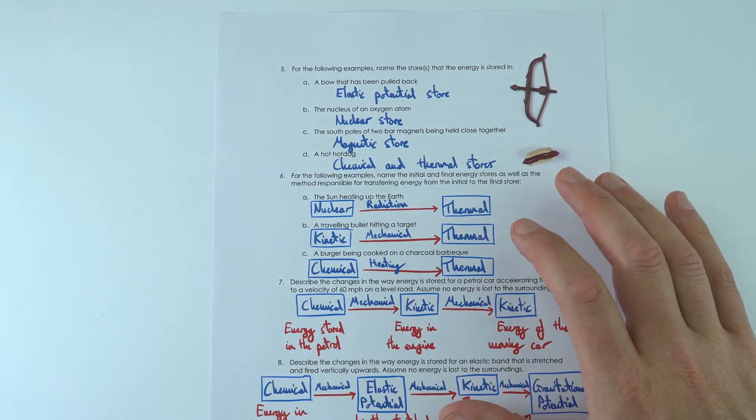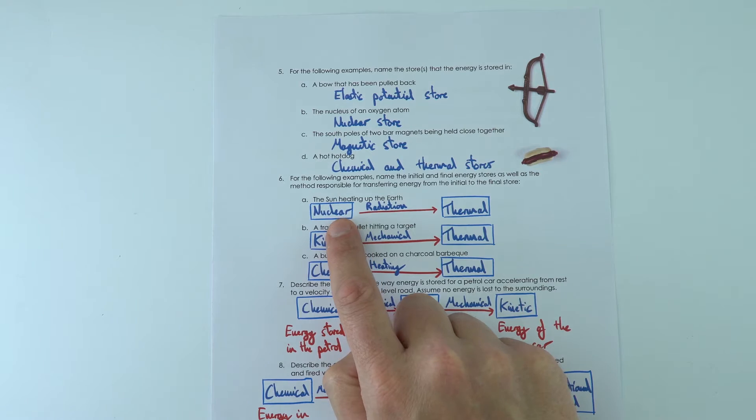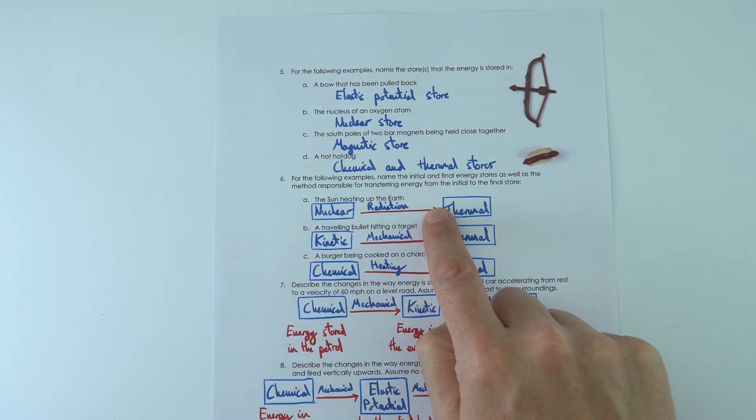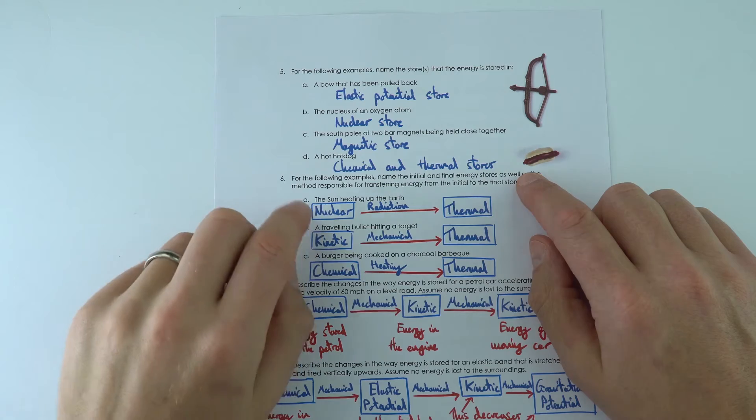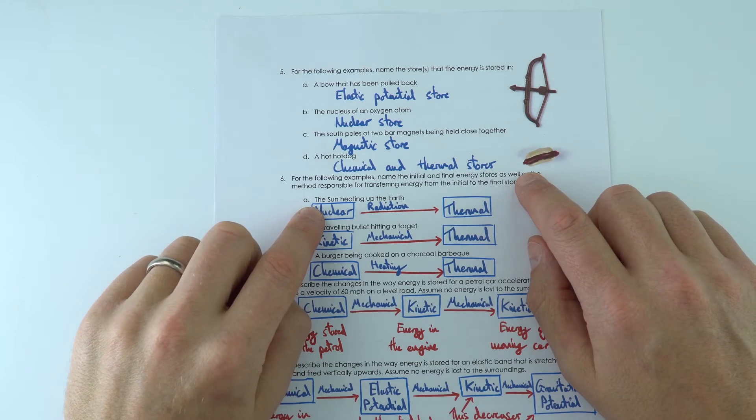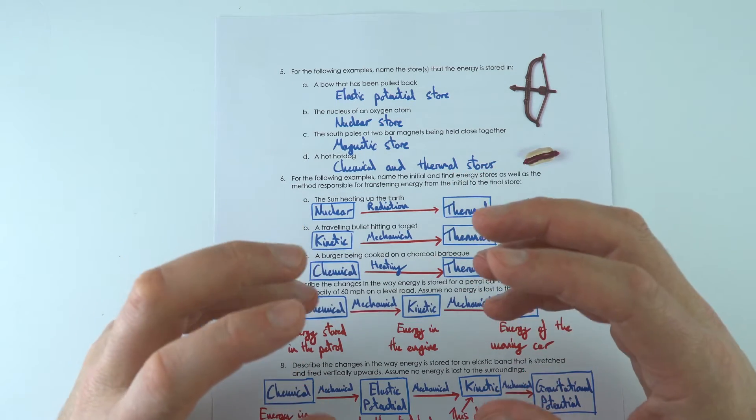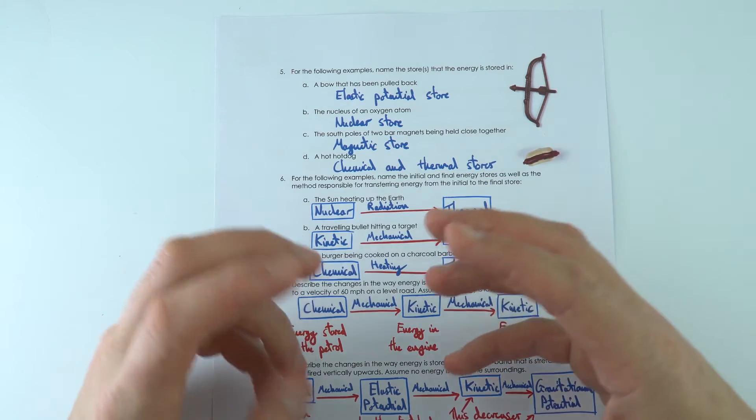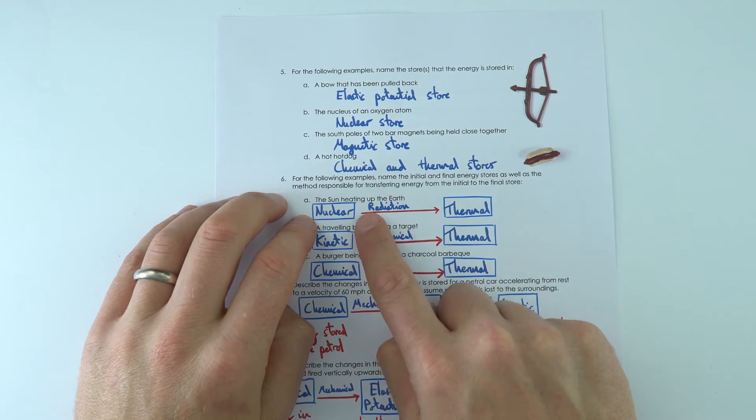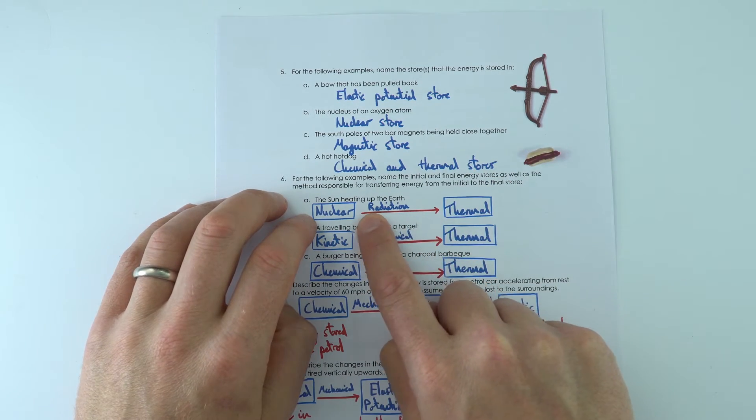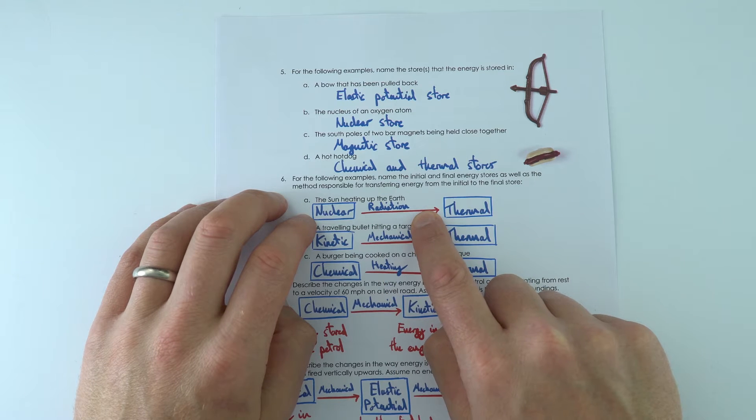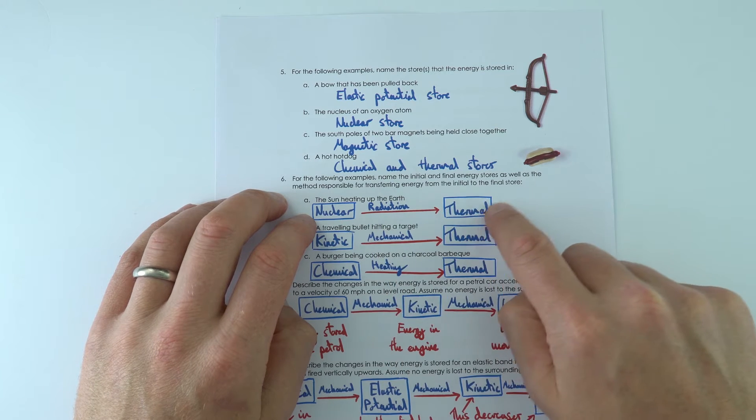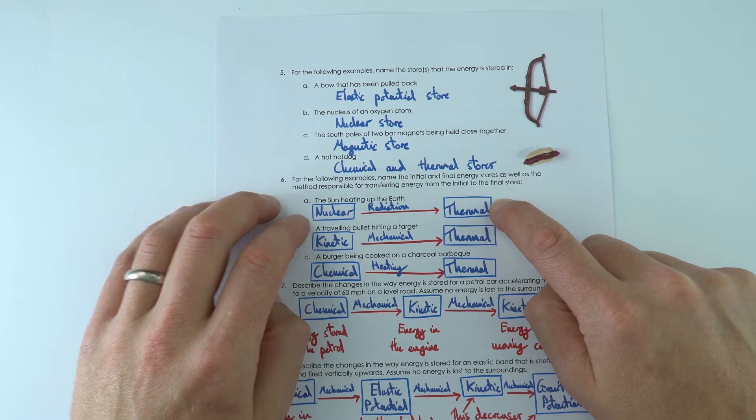Now for these ones down here, what I did was I put my stores in boxes and then I did an arrow to show the transfer. To show the sun heating up the earth, there's basically this nuclear store inside the sun, inside the small things like hydrogen which fuse together to make helium, and then it's radiated by light and other electromagnetic waves including infrared, to increase the thermal store of the earth.